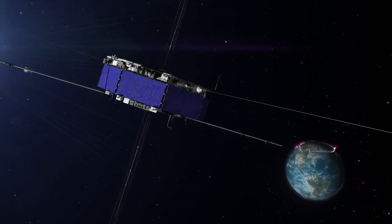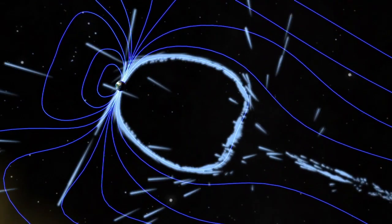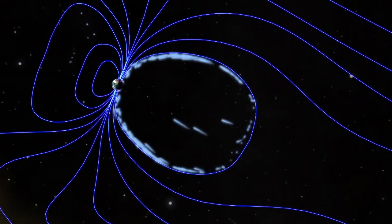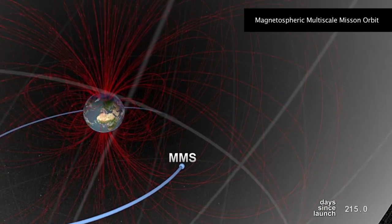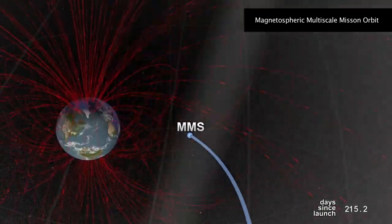MMS was designed to study a phenomenon known as magnetic reconnection, which is a kind of magnetic explosion in space. You can think of Earth as a giant bar magnet with magnetic lines of force emanating out into space in a dipole pattern.